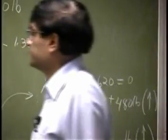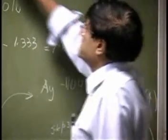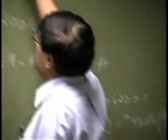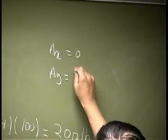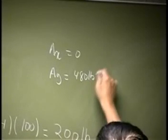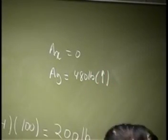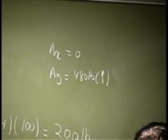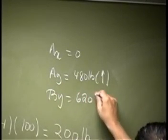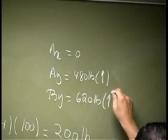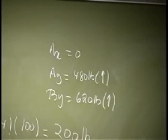So your answers for that is you have Ax as 0. That is your one reaction. Then you have Ay as 480 pounds going up. And then you have By which is 620 pounds. And that goes up.